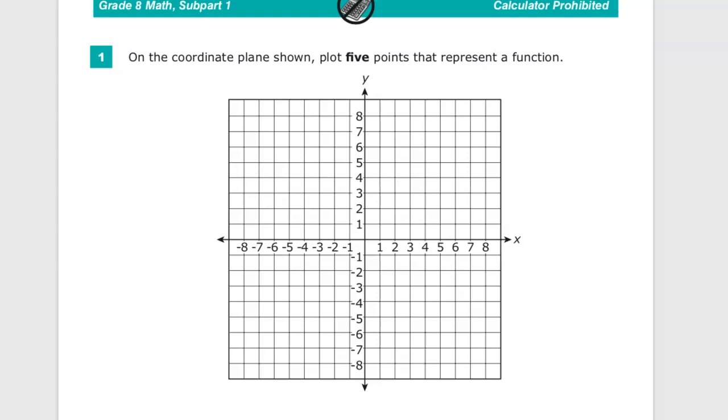Welcome. This is the Grade 8 Teen Ready Practice Test question number one. The question says, on the coordinate plane shown, plot five points that represent a function. They're giving you a lot of space to work right here. They're just asking for five points and you need to make a function.